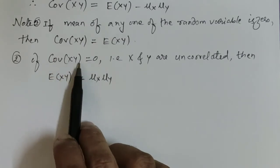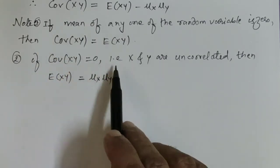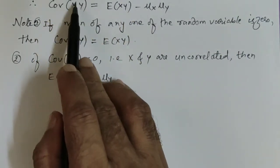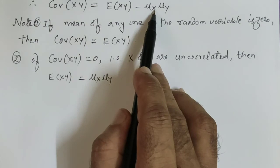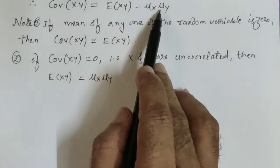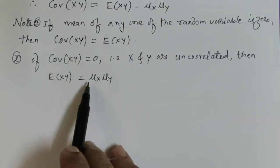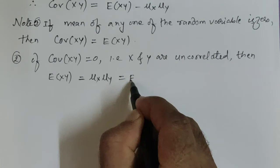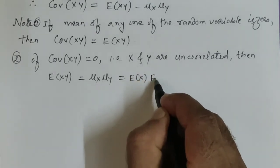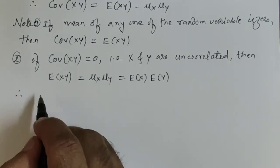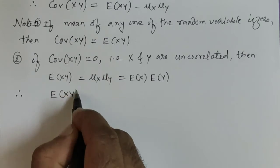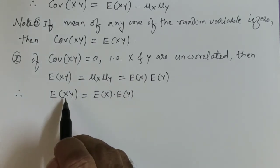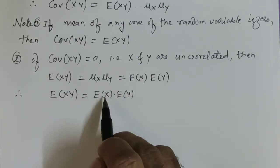The second observation: if Cov(X, Y) = 0, then X and Y are said to be uncorrelated. From the equation, since covariance is zero, E[XY] must equal μ_x·μ_y. That is, E[XY] = E[X]·E[Y], meaning the expected value of the product X and Y equals the product of the individual expected values of X and Y.